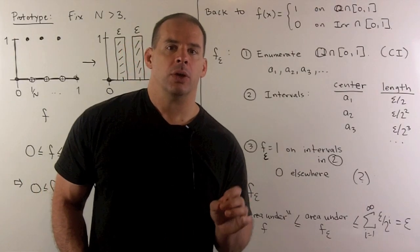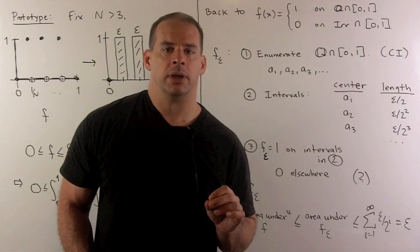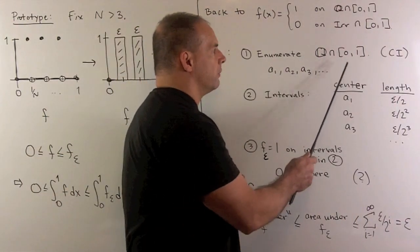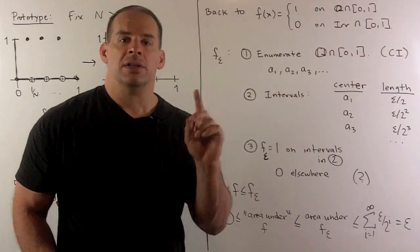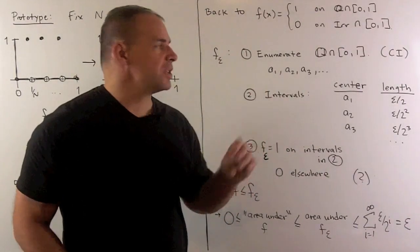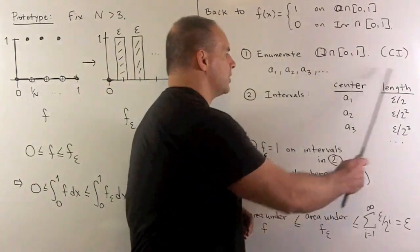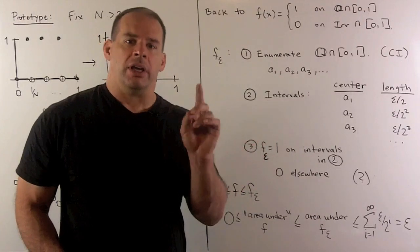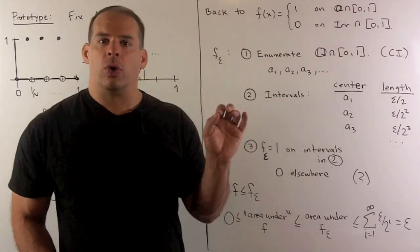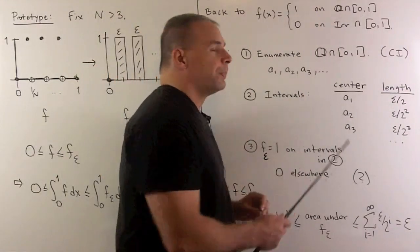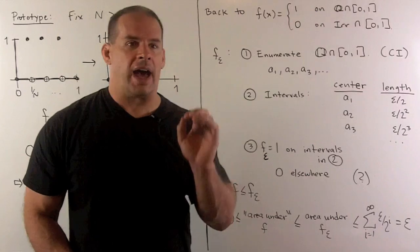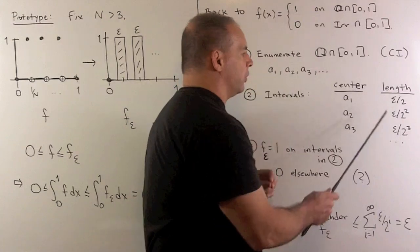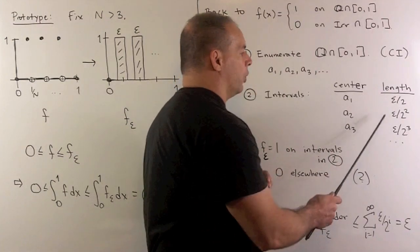For the original problem, we define an f sub epsilon also. Instead of using the multiples of one over n, we're going to put an interval around each rational number in the closed interval from zero to one. Since this set is countably infinite, we can regard it as a sequence a sub one, a sub two, a sub three, and so on. We put each of our a's at the center of an interval. The lengths won't be uniform — for a sub i, we put it at the center of an interval of length epsilon over two to the i. So a1 gets an interval of length epsilon over two, a2 of length epsilon over four, a3 of length epsilon over eight, and so on.